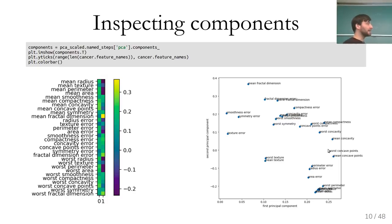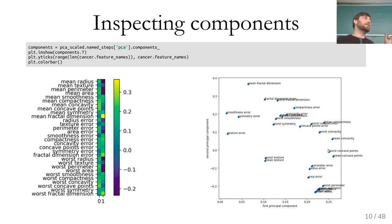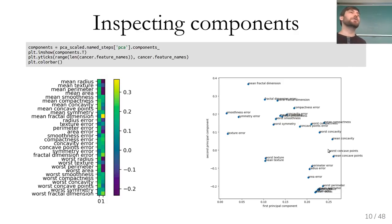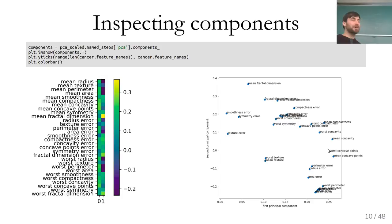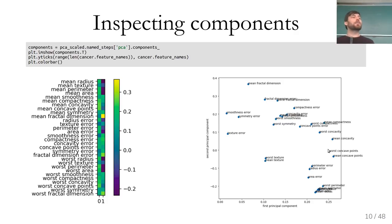This is PCA for visualization. Later in the lecture we'll talk about more complex methods, but I like PCA for visualization because first, it's unsupervised, so you can't really overfit; and second, it gives you a rotation, which I have a pretty good mental model of. Even if this axis is a linear combination of all input features with some weights, I know this axis exists somewhere in the original space.